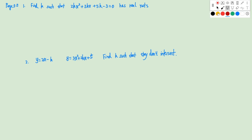Next question on page 55: find k such that this equation has real roots. We check where k appears — it's in the leading coefficient. First consider the case k = 0: plugging in gives 0 - 3 = 0, which doesn't work, so k cannot be 0. For k ≠ 0, it's a quadratic equation. For real roots, the discriminant must be non-negative: (5k)² - 4(2k)(5k-3) ≥ 0.